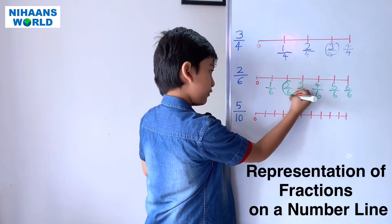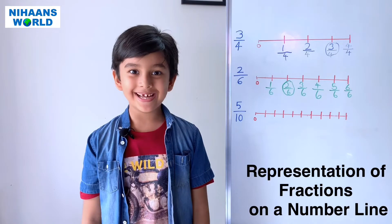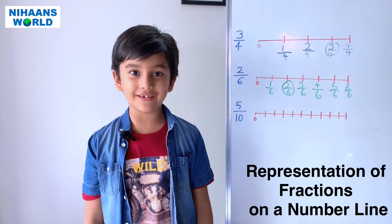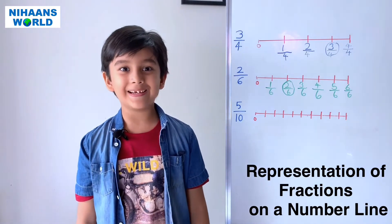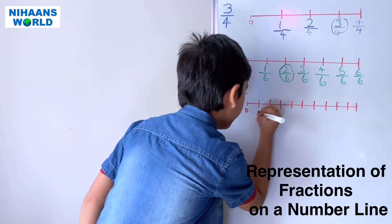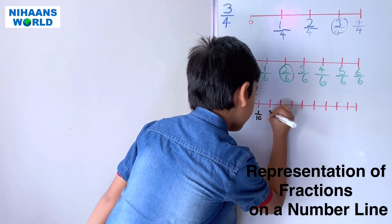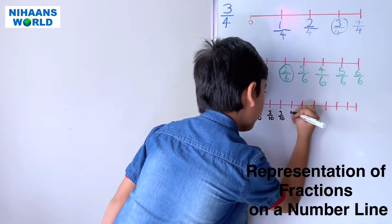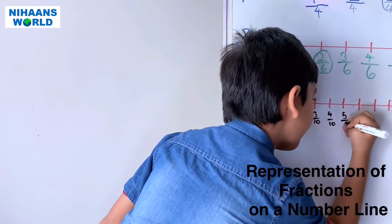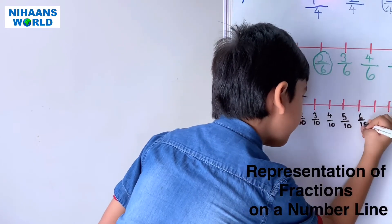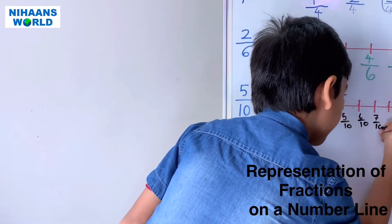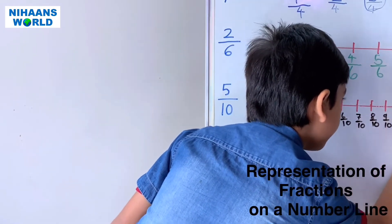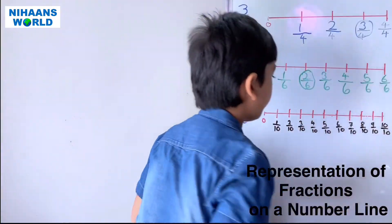So the answer is 2 by 6, right here. Friends, let's do the third example. It is 5 by 10, so we have to divide the number line into 10 equal parts. Let us start writing: 1 by 10, 2 by 10, 3 by 10, 4 by 10, 5 by 10, 6 by 10, 7 by 10, 8 by 10, 9 by 10, 10 by 10.